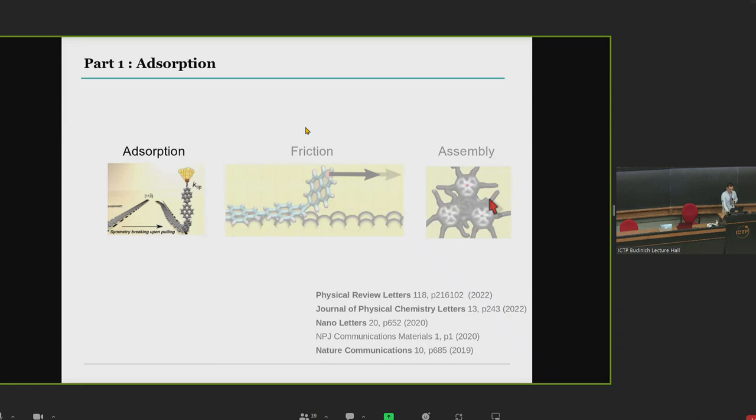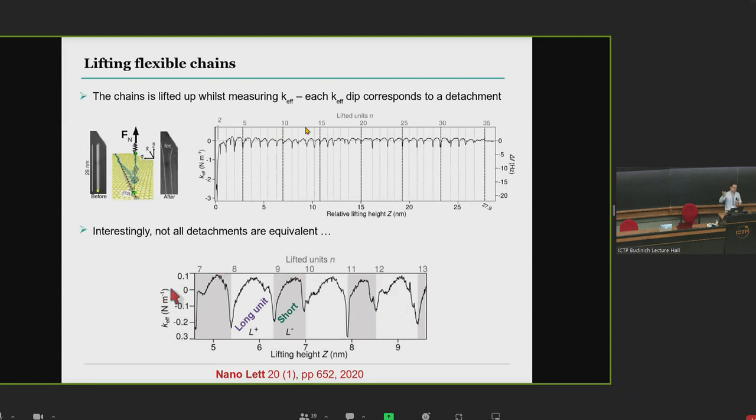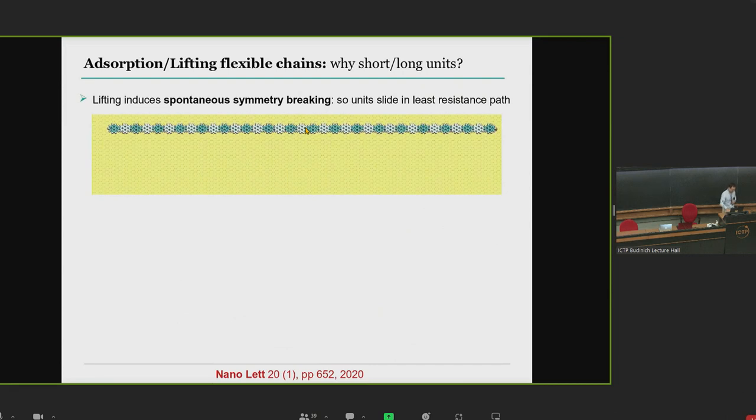First, the adsorption. I'll be very brief, as Rémy already mentioned a substantial part. We have a molecule deposited over the surface, and we started lifting it up. You can measure the gradient of the normal force while you do so, which is the contact stiffness. When you look at the contact stiffness, you observe short and long detachment units. This is quite surprising, considering it's a chain composed of identical units. This repeats throughout the whole lifting process, in the simulations and in the experiments.